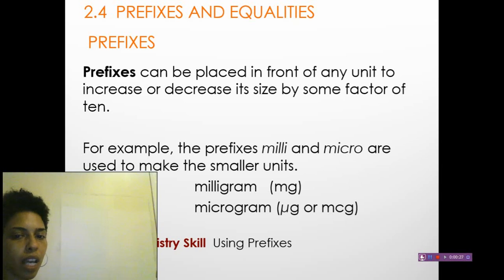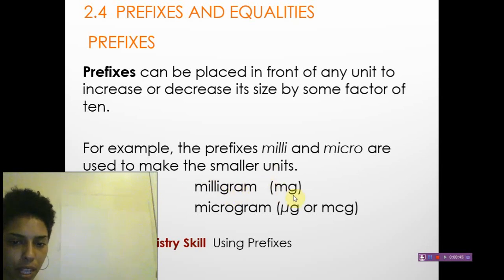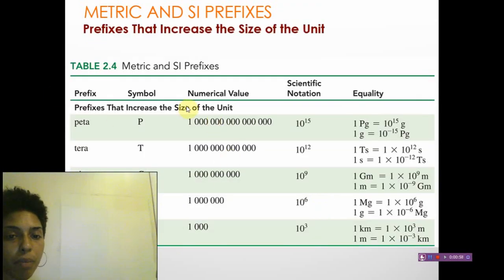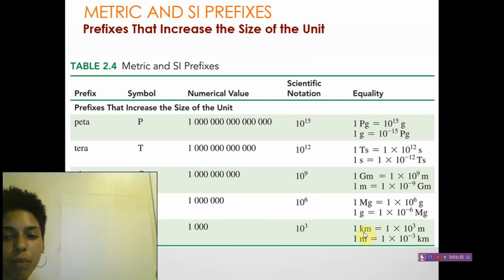Prefixes can take the place of certain numbers, and we can use their abbreviations to represent these numbers. For example, milligrams — milli is represented as 'm', micro is represented as 'mu' or 'mc', as you usually see in hospitals. These metric prefixes are all positive and increase the size of the unit. The most important one to remember in this group is kilo — one kilometer equals 10³ meters, or equivalently, one meter equals 10⁻³ kilometers.